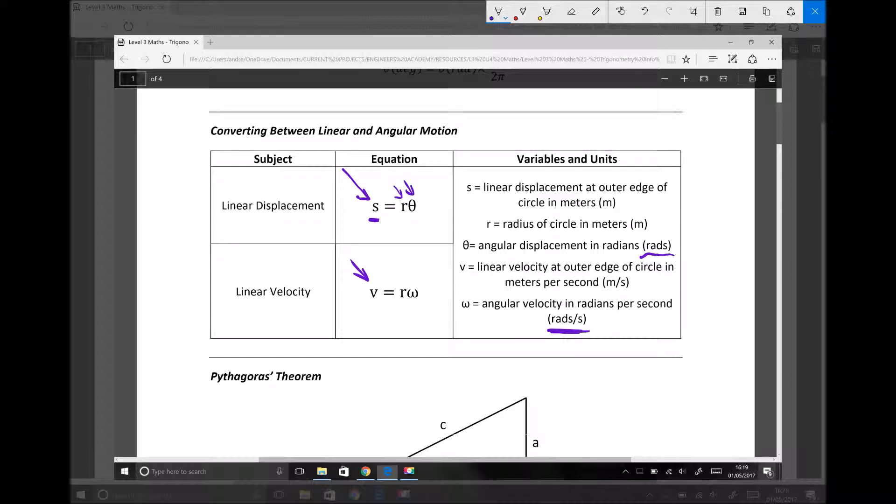You've seen how to convert from revolutions per minute to radians per second. Providing you remember to do that step first of all, all you then need to do is multiply by the radius to get the linear velocity. So the application is very straight forward, providing you remember to work in SI units of radians and radians per second.